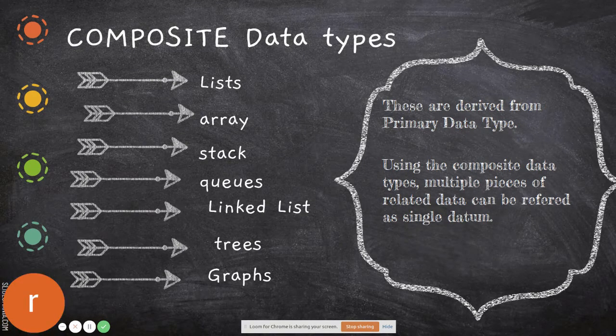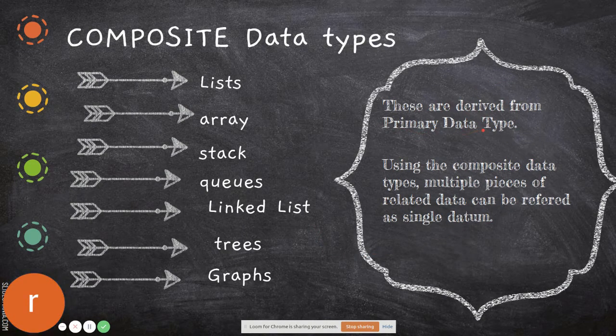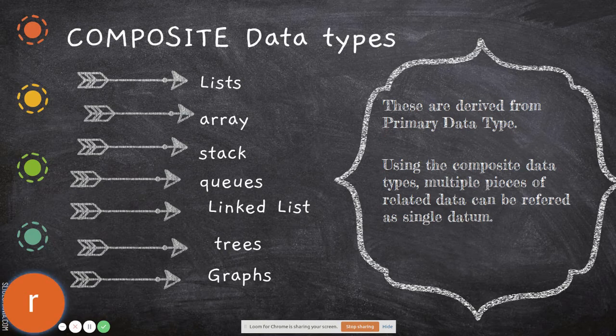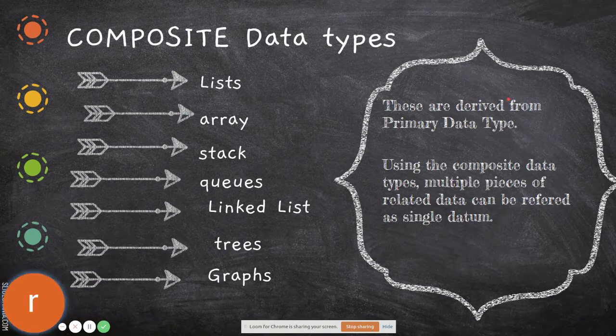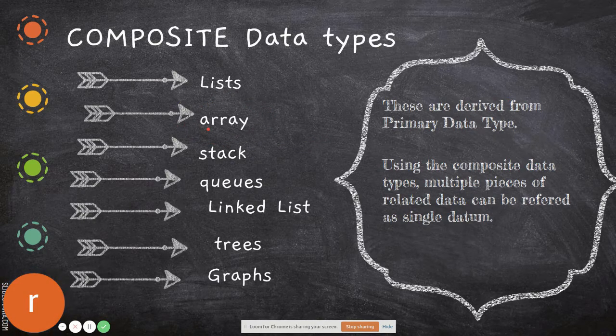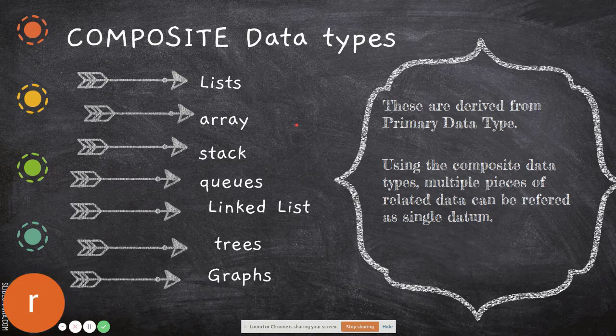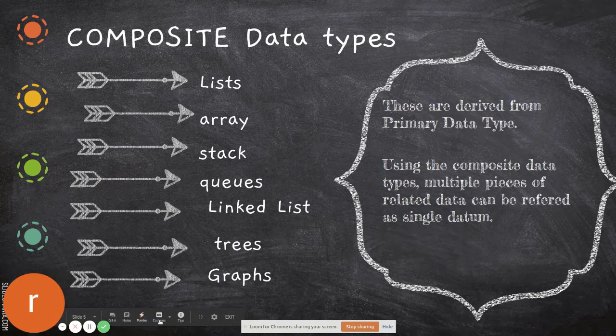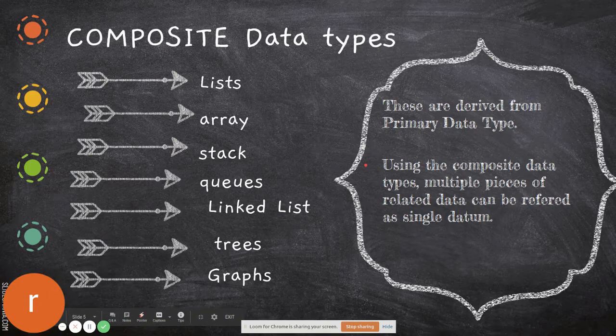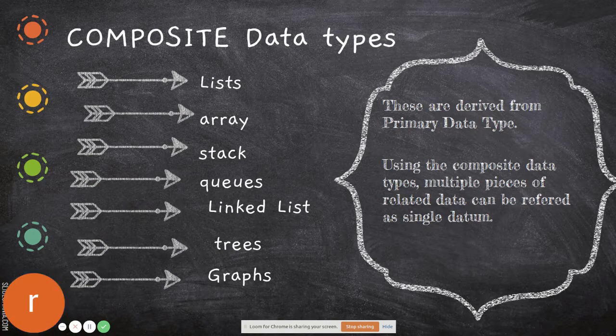Composite data types are derived from primary data types. Based on the primary data types we've seen, you build more structures. These are called composite data types. For example, you've studied arrays in C++. If you declare X of 5 as integer, all values from X0 to X5 will consist of integers.